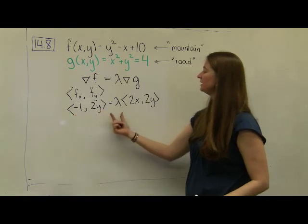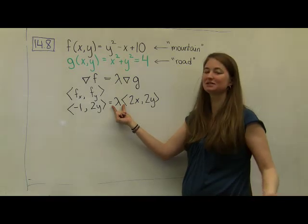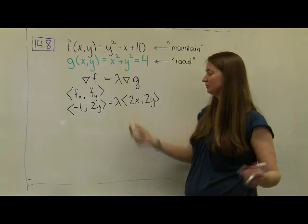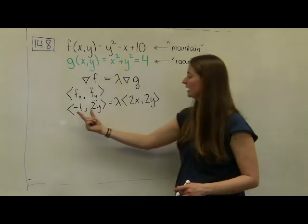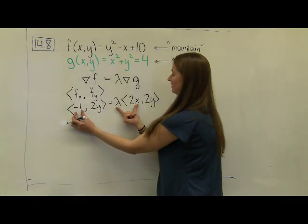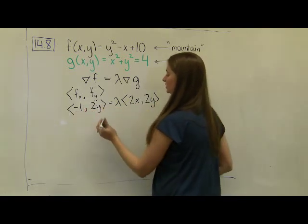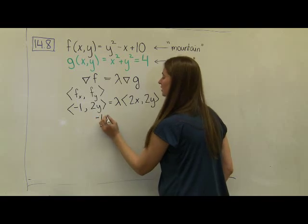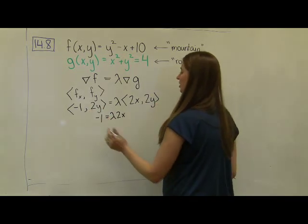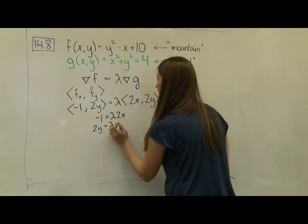So I need the vector (-1, 2y) to be equal to some scalar multiple of the vector (2x, 2y). This lambda is just some scalar multiple — we use Greek letters to mean it's just some constant value; it's lambda after Lagrange. In order for these two vectors to be equal to one another, the x components have to be equal and the y components also have to be equal. Setting the x components equal: negative 1 equals lambda times 2x. Setting the y components equal: 2y equals lambda times 2y.